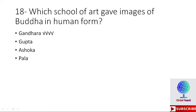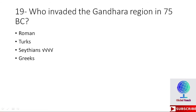MCQ 18: Which school of art gave images of Buddha in human form — Gandara, Gupta, Ashoka, or Pala? The right option is Gandara. The Gandara school of art gave images of Buddha in human form. MCQ 19: Who invaded the Gandara region in 75 BC — Romans, Turks, Saithians, or Greeks? The right option is Saithians. The Saithians invaded the Gandara region in 75 BC.